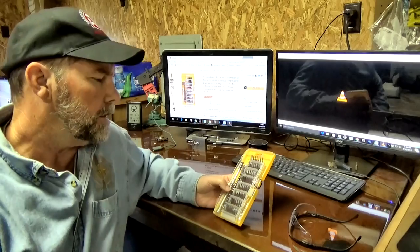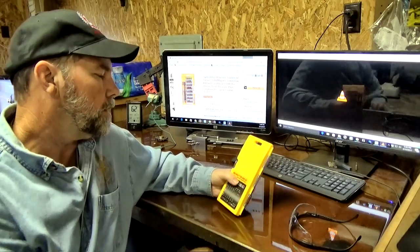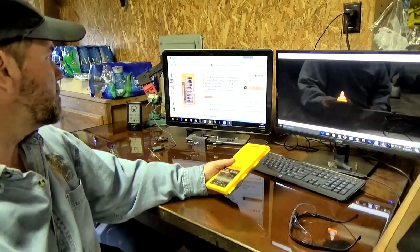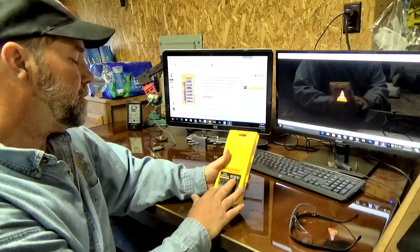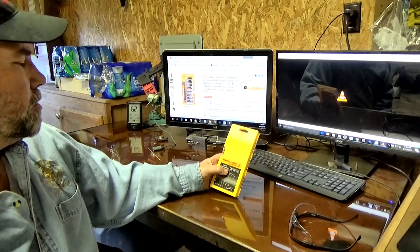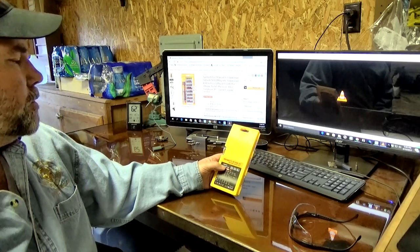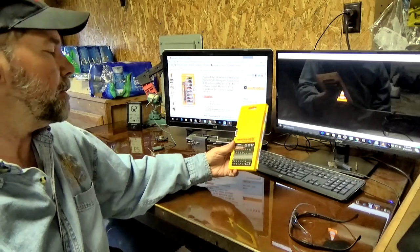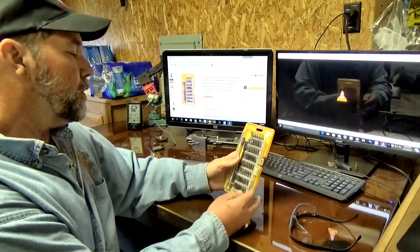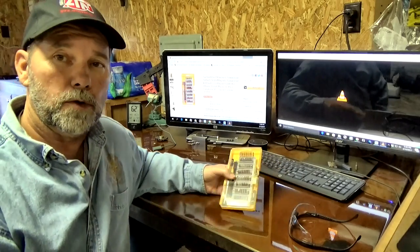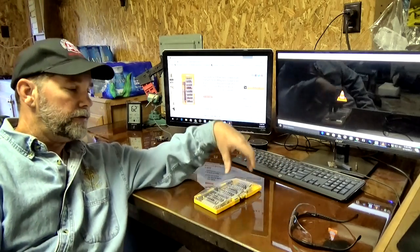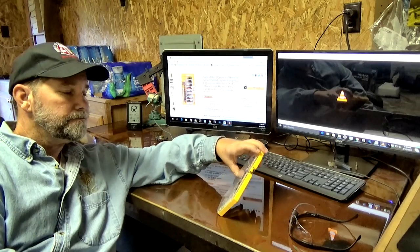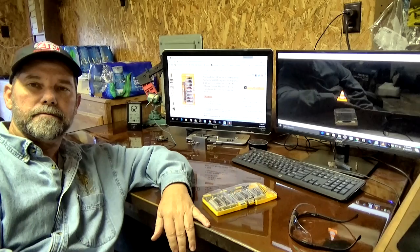All right folks, so there you have it. 60-in-1 precision screwdriver bit kit, 15 bucks at Amazon. Kit number 6100, tells you which bits are in there, security bits and whatnot. Overall, certainly well worth it. I don't think you can go wrong for 15 bucks. I will put the link in the doodly-doo below the video. See you next time.